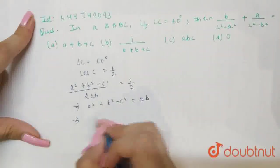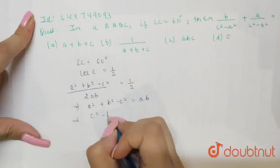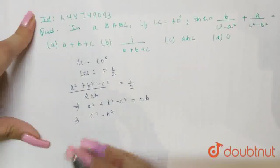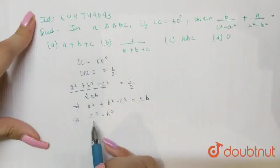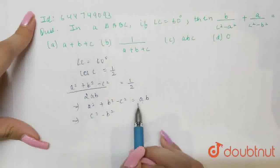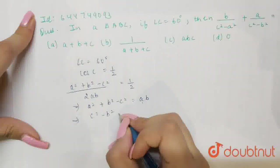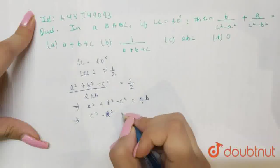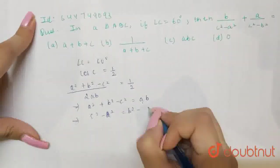Now, what is the value of c square minus b square? So, if I put the value, see here c square minus b square will be equal to, if I take this here, this will be equal to, c square minus a square will be equal to b square minus ab.